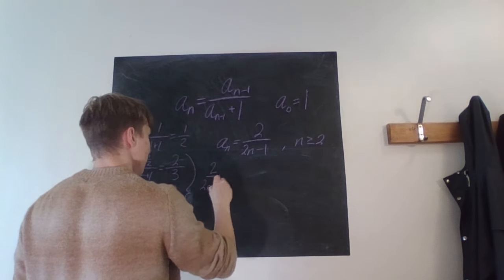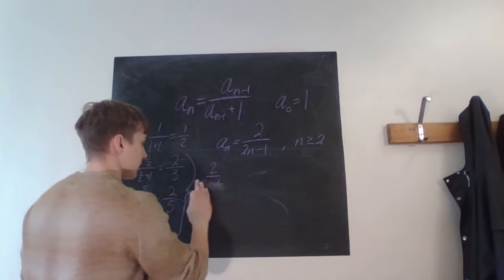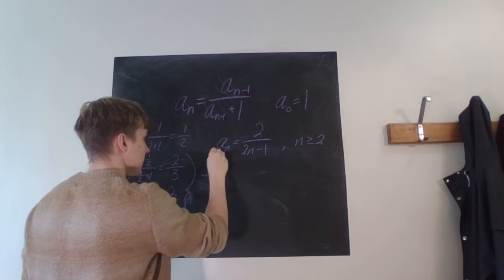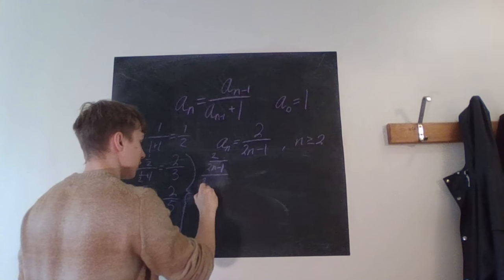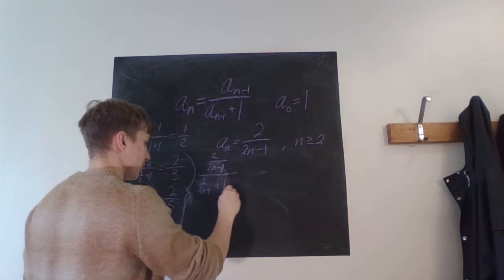Instead, I'm sorry, I will start with the right hand side. So we have two over 2n minus one, over two over 2n minus one, this is the big division sign of course, and then plus one.